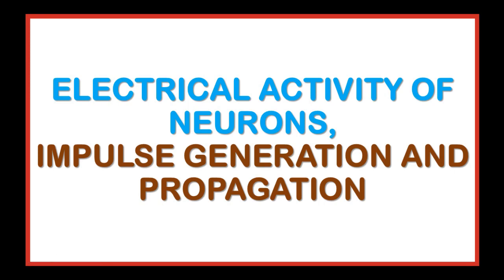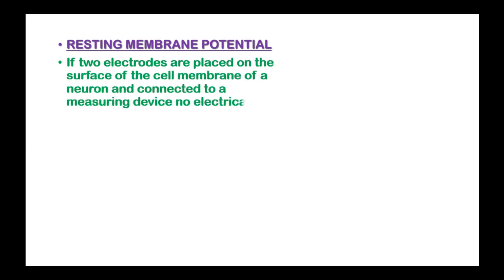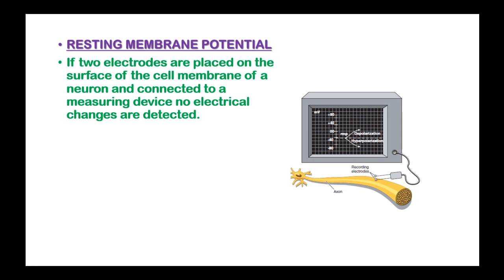Electrical activity of the neurons, impulse generation and propagation. If two electrodes are placed on the surface of the cell membrane of a neuron and connected to a measuring device, there will be no electrical change detected.